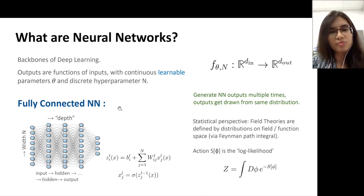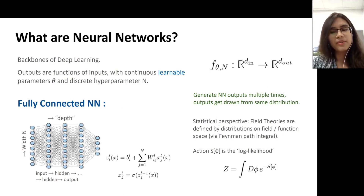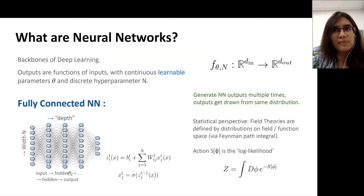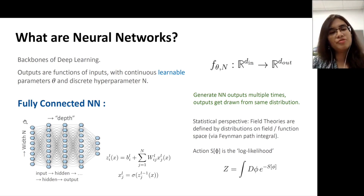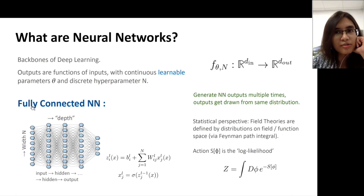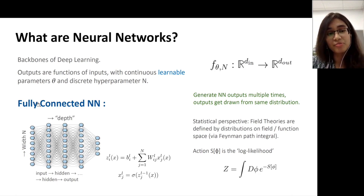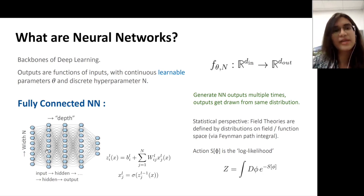One important note: both inputs and outputs are real numbers. So if one wants to construct fermionic field theory or assign a notion of time to the input side, additional challenges arise. For fermionic field theory, one would need to construct anti-commutation relations between the outputs. For a temporal direction in the input layer, one needs to decide which component of inputs should be treated as time and how that differs from training time.